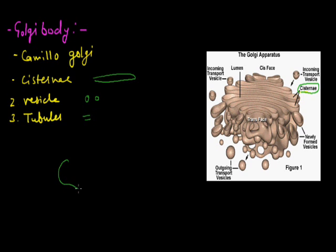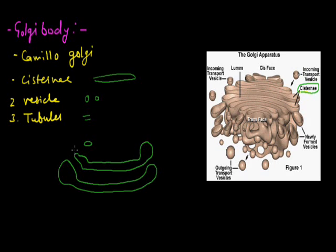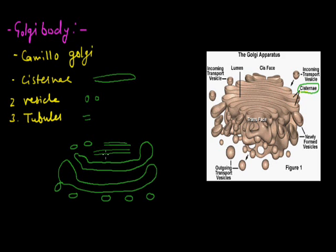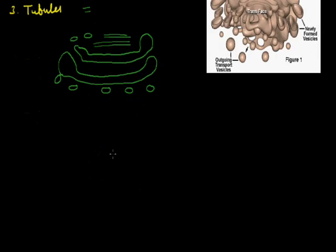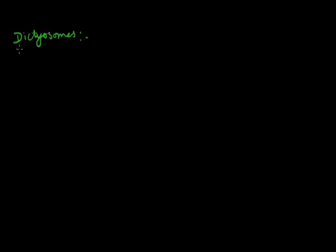These cisternae have vesicles — spherical bodies — and fine tubules responsible for the transportation of molecules in the cell. Golgi body is present in animal cells as well as plant cells. In the animal cell it is called Golgi body, while in the plant cell it has another name — we call them dictyosomes. In the case of bacterial cells it is absent. Its number also depends on the functions of the cell: if the cell requires more secretion of molecules and proteins, it will have more Golgi bodies.